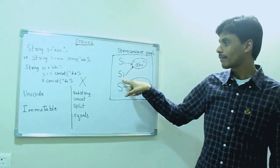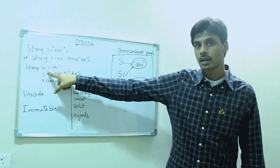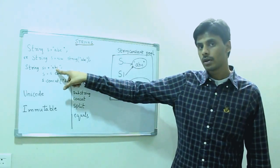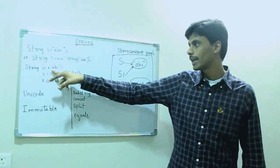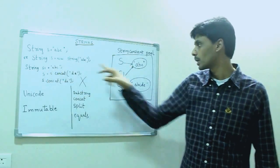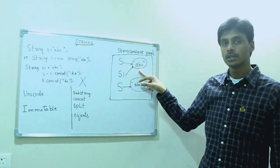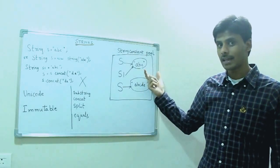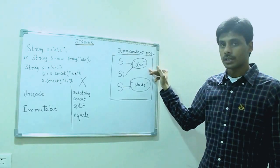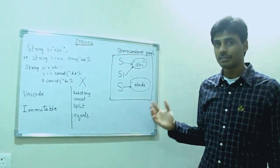If we had another variable S1 which also uses the same ABC value, JVM instead of creating a separate memory space points this S1 to the same ABCDE. And if we have an S2 with the same string value, JVM will again point it to the same memory location. That makes Java efficient.